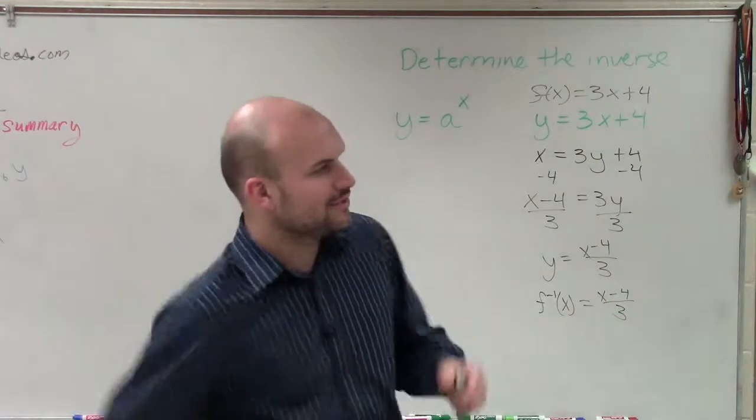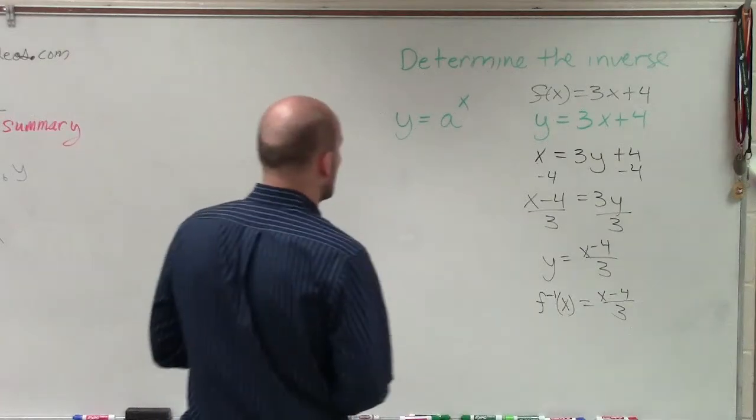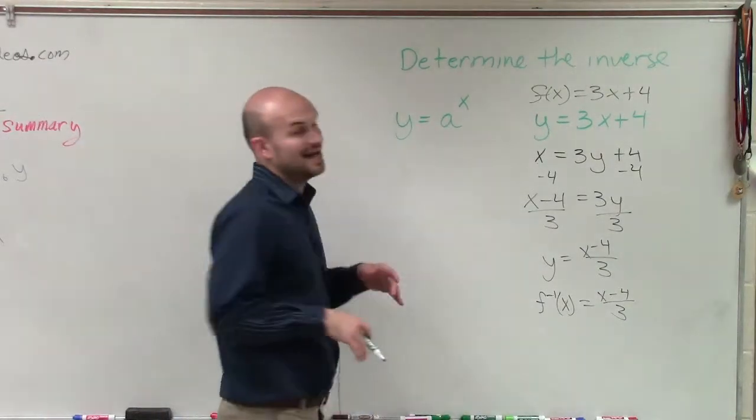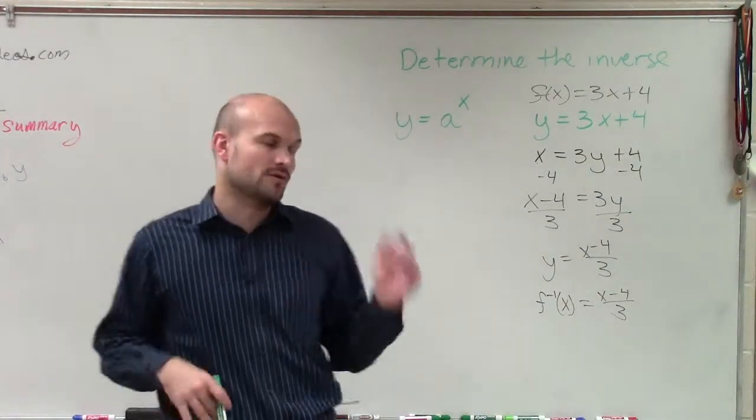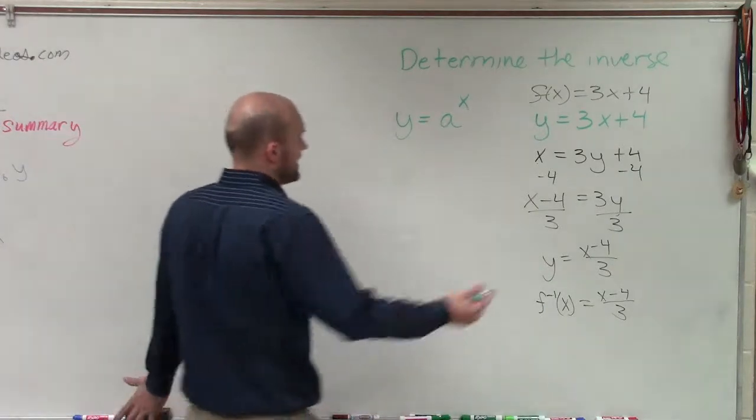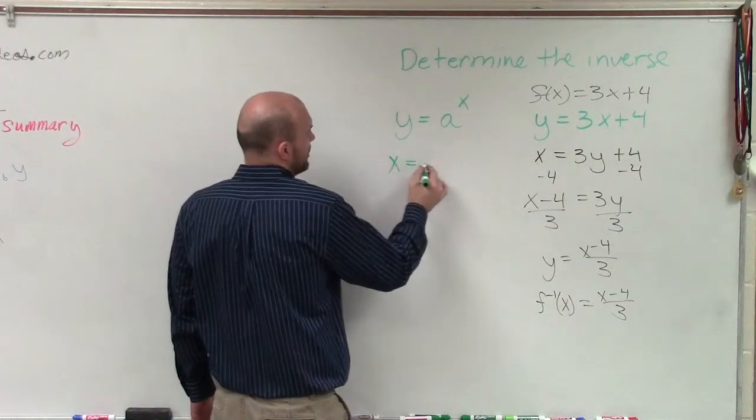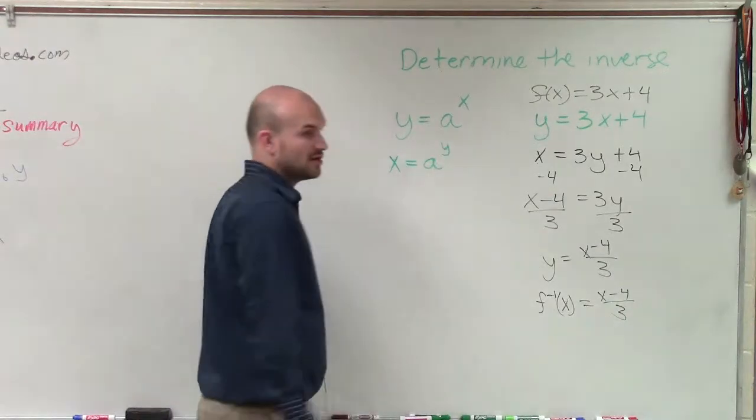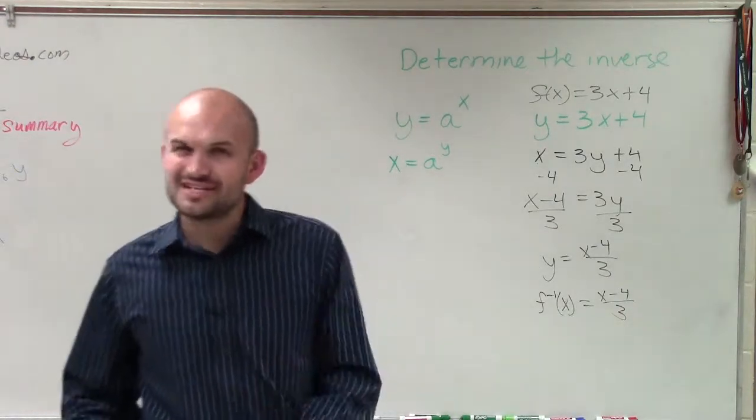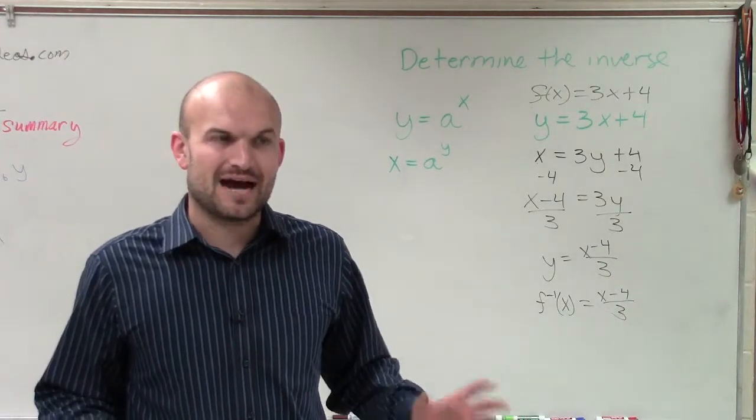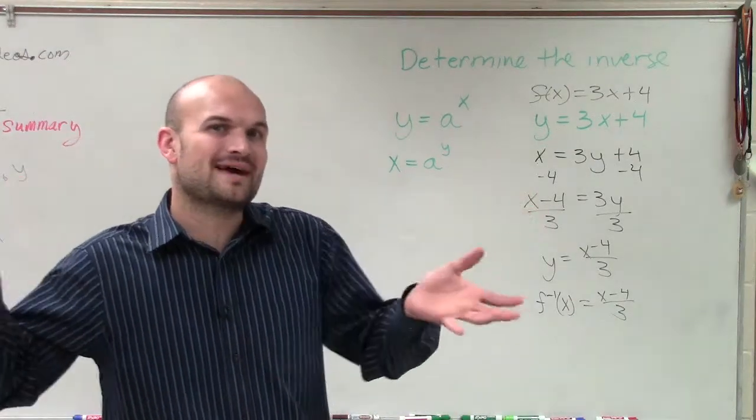So now we're going to get into how to find the inverse of an equation where I have y equals a raised to the power of x. Well, to do this, again, we're going to follow our same process where we're going to swap the x and the y. And now we need to solve for y. And that's where it comes into our issue, is how are we going to solve for a variable when it's up as in the exponent?